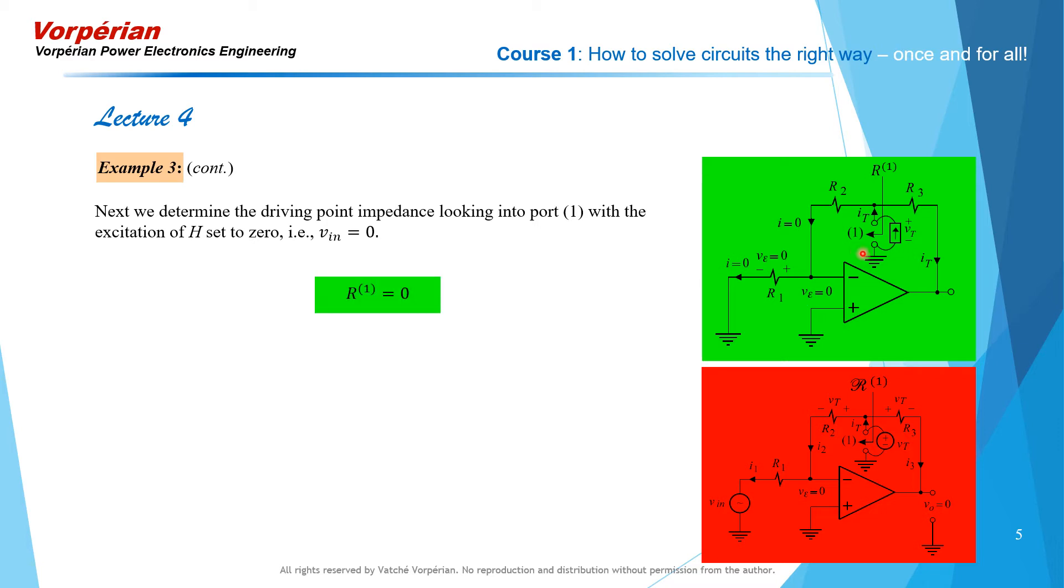For the first one, when we set this excitation equal to 0, and this is an ideal op-amp, the differential input voltage is 0. That means that the voltage across R1 is 0, so it doesn't draw any current. There's no current going into the op-amp, hence there is no current through R2, and that means that the voltage Vt, which is the voltage between this point and ground, the sum of the voltages across R2 and R1, both being 0. Vt is 0, therefore Vt over It, the ordinary impedance looking into port 1, is 0.